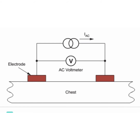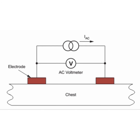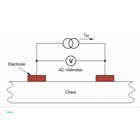The next technique is impedance pneumography. It is a commonly used technique to monitor the respiration rate of a patient. As the respiration occurs, the impedance across the chest of a subject changes. This is the idea behind impedance pneumography.